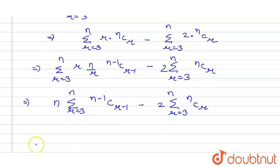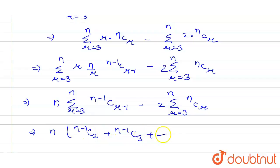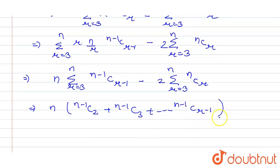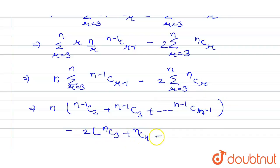Now we expand both summations. The first becomes n times [(n-1)C2 + (n-1)C3 + ... + (n-1)C(r-1)]. The second term becomes minus 2 times [nC3 + nC4 + ... + nCn].